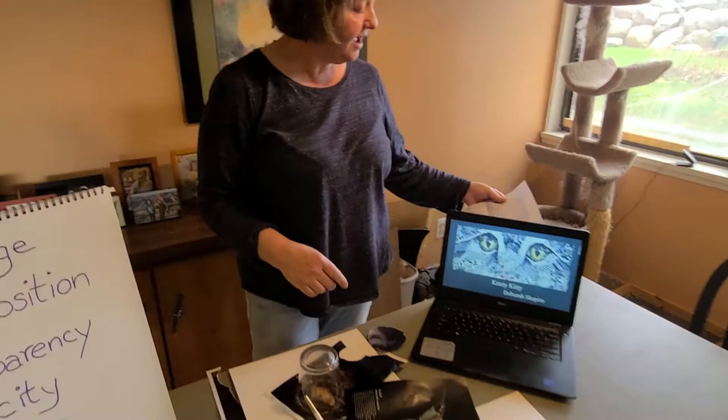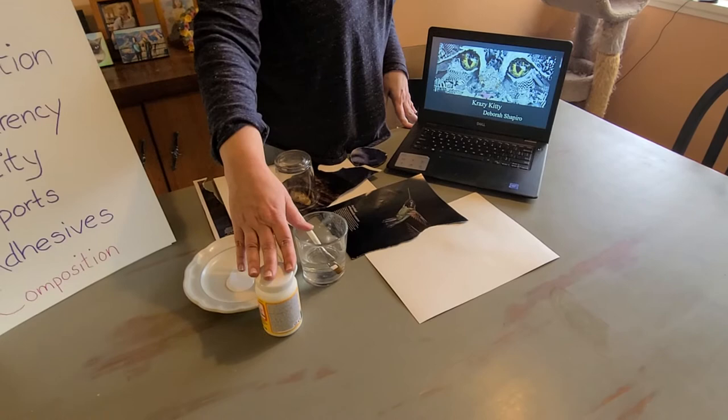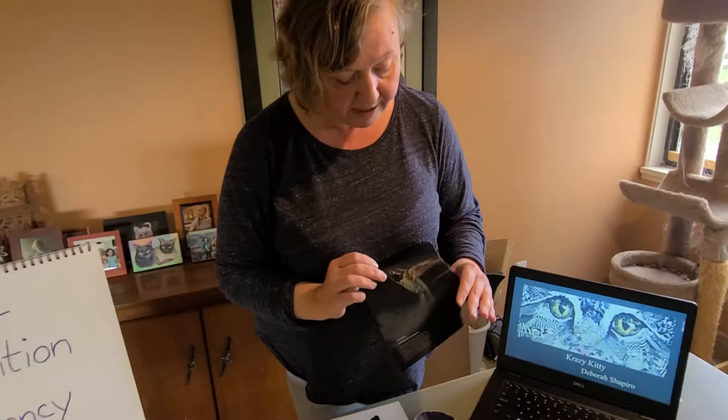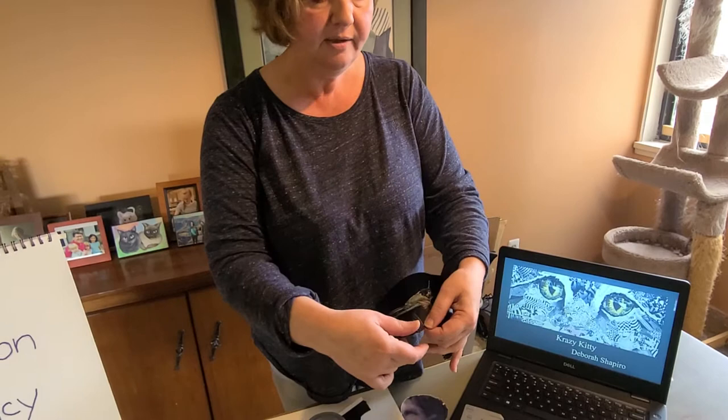Let's get started. As you can see, I have my paper surface, adhesive — I'm using Mod Podge — a brush, and some water; not a lot is needed. I'm going to show you by tearing this out for my piece, and for the sake of time I'll do this a little bit quickly.